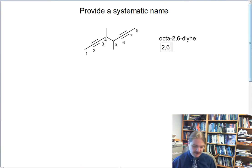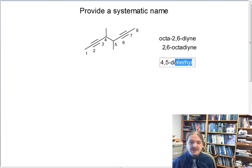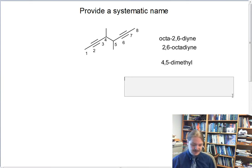We also have two methyl groups, 4,5-dimethyl. Now all we need to do is put these two things together: 4,5-dimethyl-2,6-octadiyne. Or we could have 4,5-dimethyl-octa-2,6-diyne.